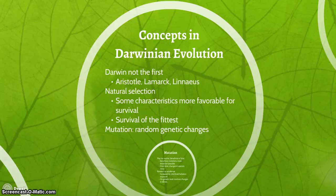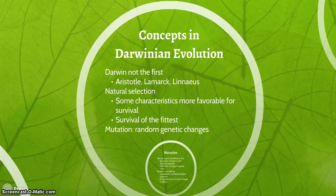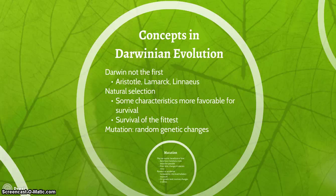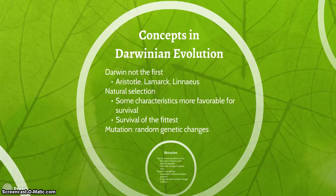Some of the important concepts in Darwinian evolution include the idea of natural selection — some characteristics are more favorable for survival than others — and the survival of the fittest. Also the idea of mutation, which is random genetic changes. Darwin was not the first theorist of evolution. The very first was Aristotle, a Greek philosopher who came up with an idea of evolution, and more recently in the 19th century were Lamarck and Linnaeus.